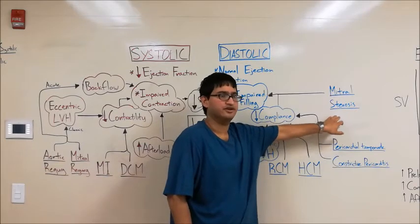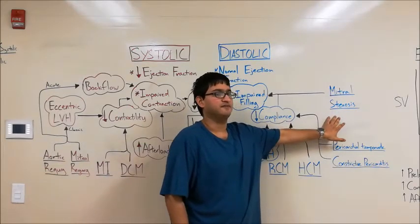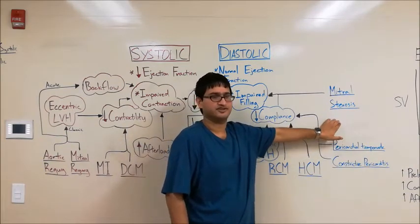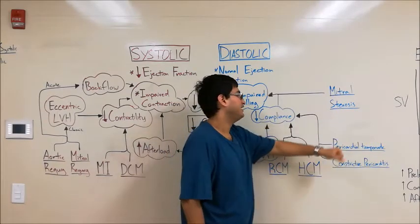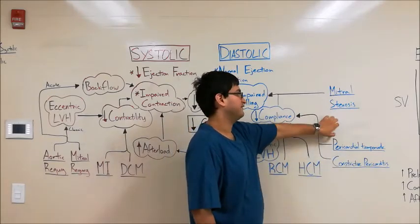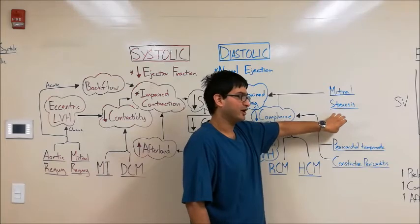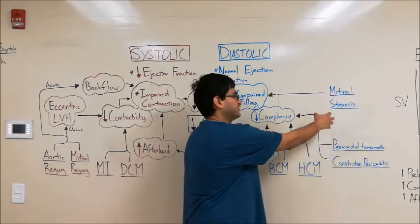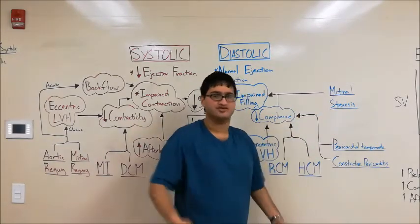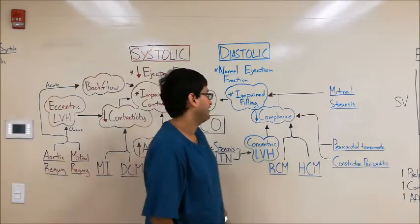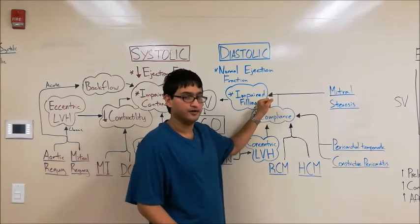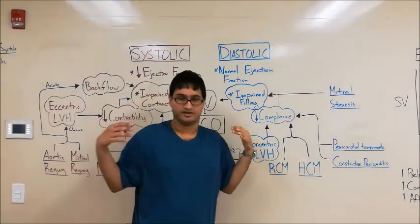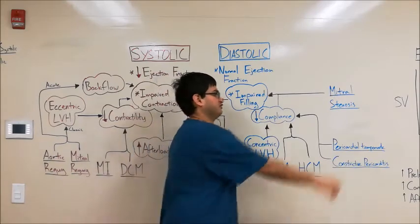Let's look at mitral stenosis. The mitral valve is located between the left atrium and the left ventricle; it opens to allow blood to flow from the atrium to the ventricle during diastole, and closes during systole to prevent backflow. In mitral stenosis, thickening and fibrosis of the valve make it harder for blood to travel from the atrium to the ventricle, resulting in less blood getting through — impaired filling. Not because the ventricle itself is problematic, but because the valve obstructs flow, leading to decreased cardiac output and diastolic heart failure.